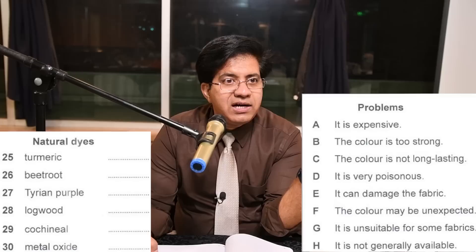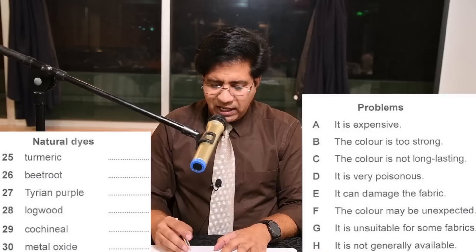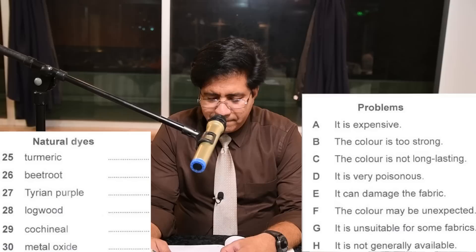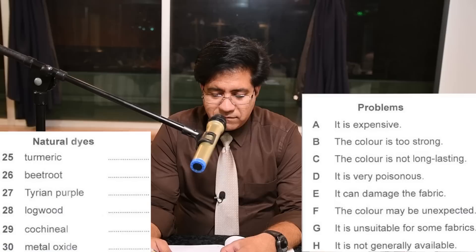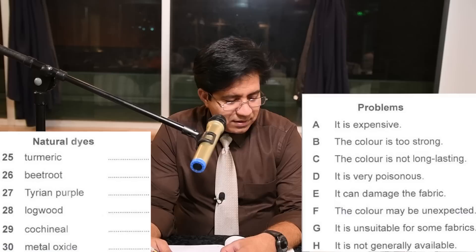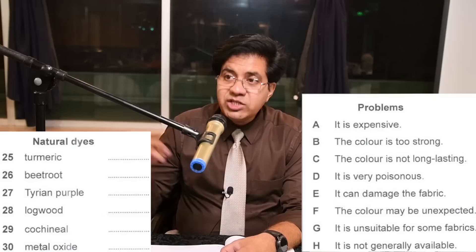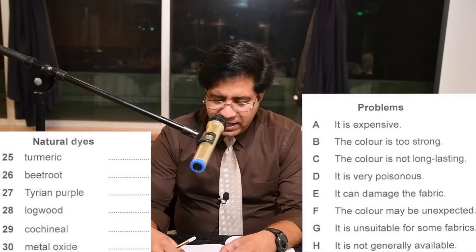Question 27: tyrian purple — a natural dye from a shellfish, worn in ancient times only by important people as it was so rare. It fell out of use centuries ago, though one researcher managed to get hold of some recently. The key word is 'rare' — it is not generally available. The answer is H.